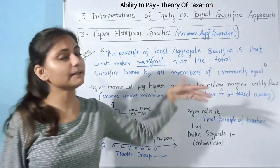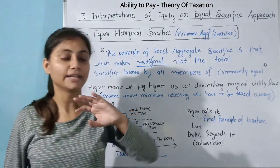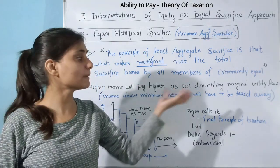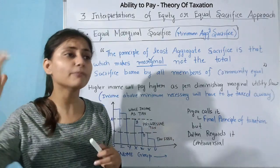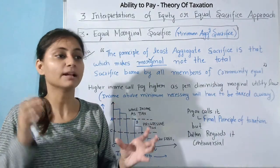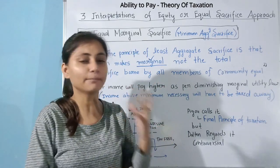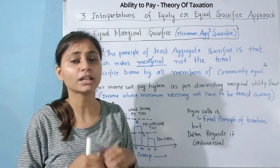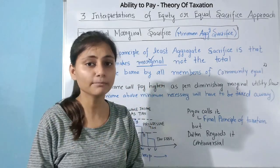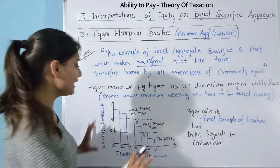So higher income will pay higher as per the diminishing marginal utility law. And income above the minimum necessary level will have to be fully taxed away — because at that level, the marginal utility a very wealthy person receives is extremely low. So any income above the minimum necessary level goes entirely into taxes.